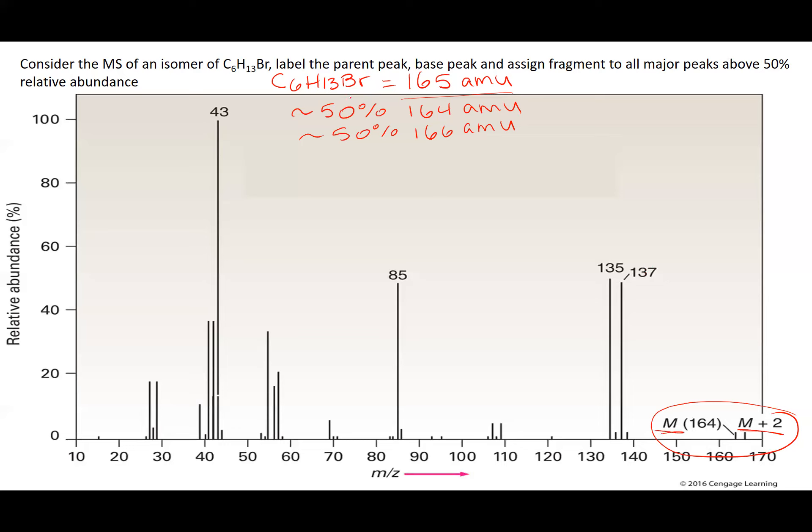For bromine, for chlorine they're about 75-25%, they're actually like 76-24. But our y-axis is not that accurate, so we don't need to be that accurate. So here are my parent, this is the parent peak.